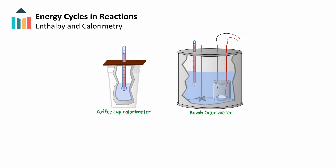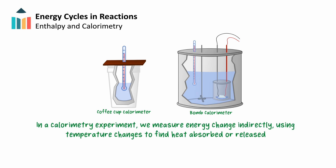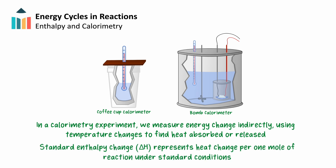In a calorimetry experiment, reactants are placed in an insulated container to minimize heat loss. Instead of measuring energy directly, we measure temperature changes in water or another surrounding medium to determine how much heat was absorbed or released by the chemical system. From this, we can calculate a standardized change in enthalpy for the reaction, showing how heat is either gained or lost when one mole of the reaction occurs under standard conditions. For us in the classroom, conducting calorimetry experiments for every reaction would be impractical. Instead, we'll use many standardized calorimetry experiments that have already been conducted to determine enthalpy changes for common reactions, allowing us to calculate the enthalpy change of almost any reaction without performing an experiment every time.